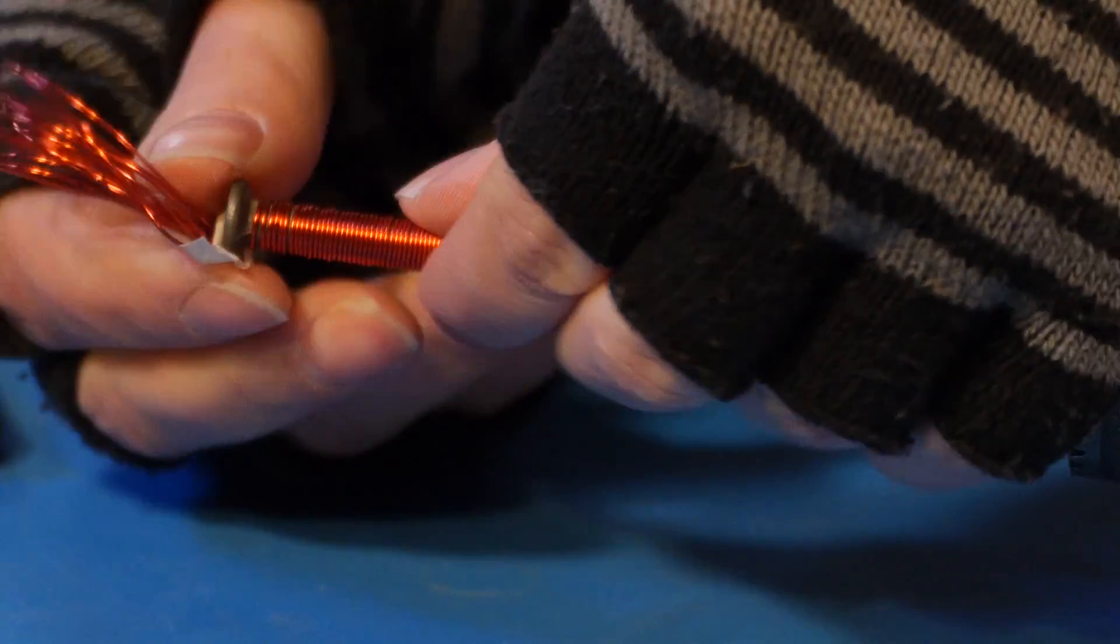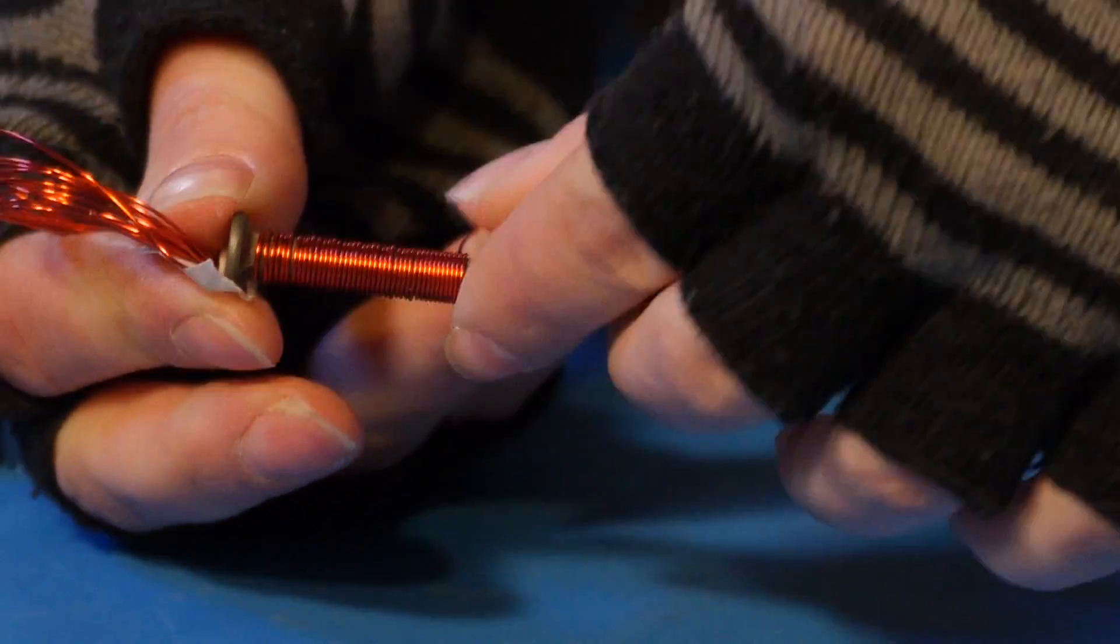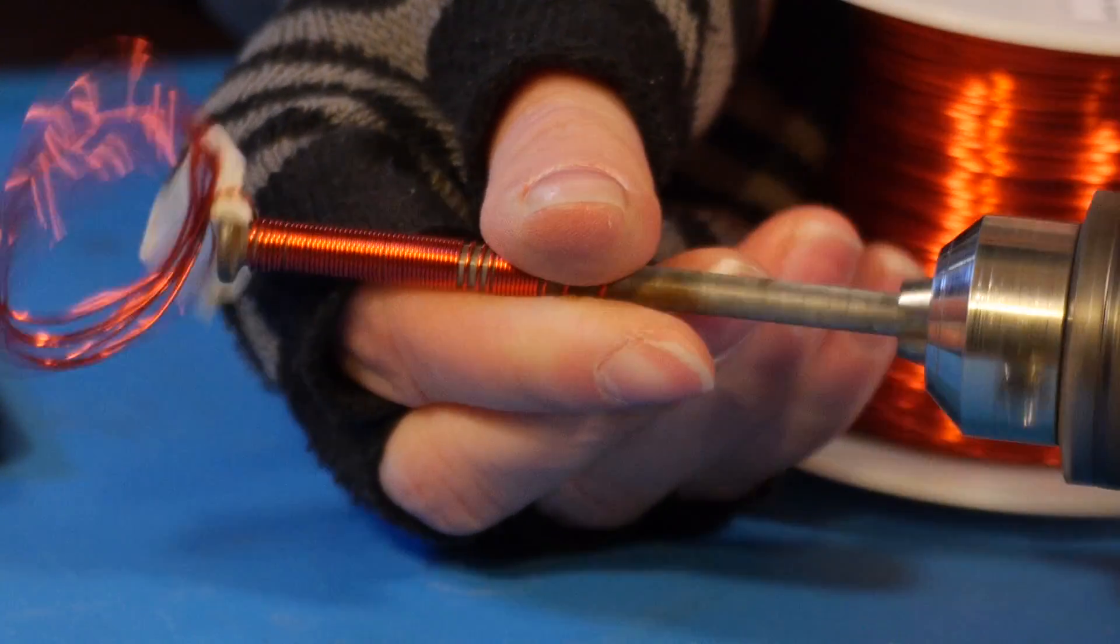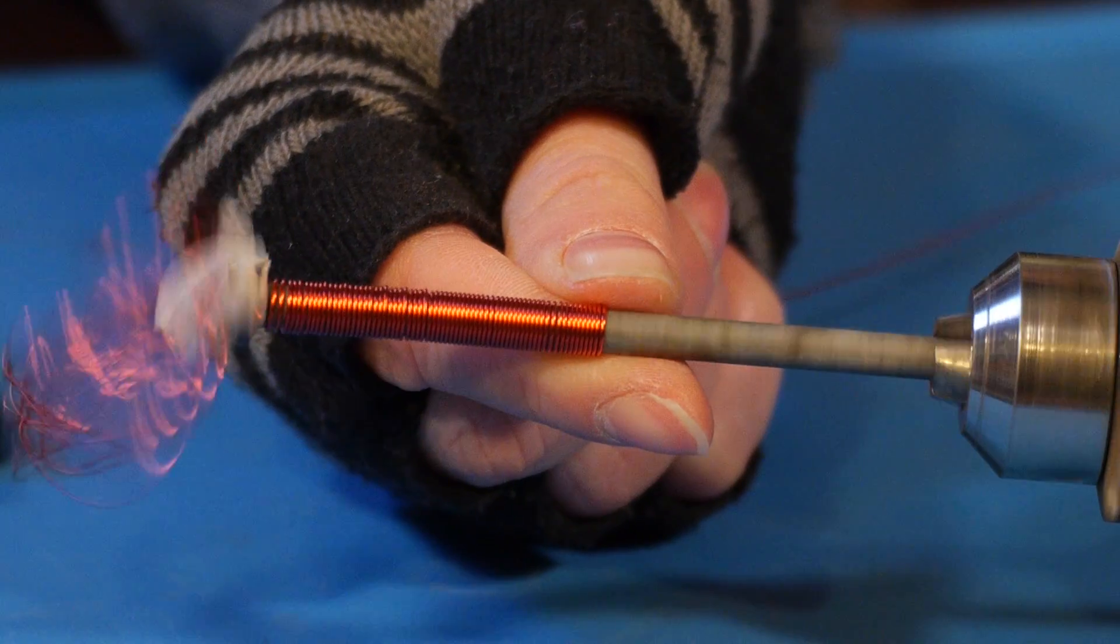You want your turns right next to each other and as close to the core as possible. Wrap only in one direction. If your wire crisscrosses, the current may flow in different directions and make the magnet weaker or not work at all. The same goes if you wrap multiple layers. Make sure it all goes in the same direction.